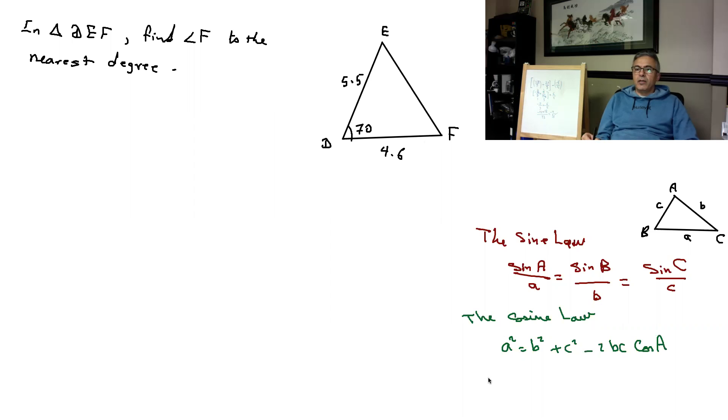Use the cosine law when you have side-side-side or side-angle-side, and the angle has to be between the two sides. Here you see the angle is between the two sides, so we have to use the cosine law to find this piece right here, D.